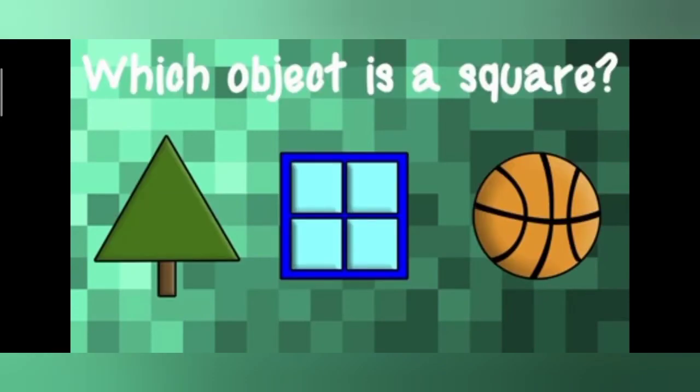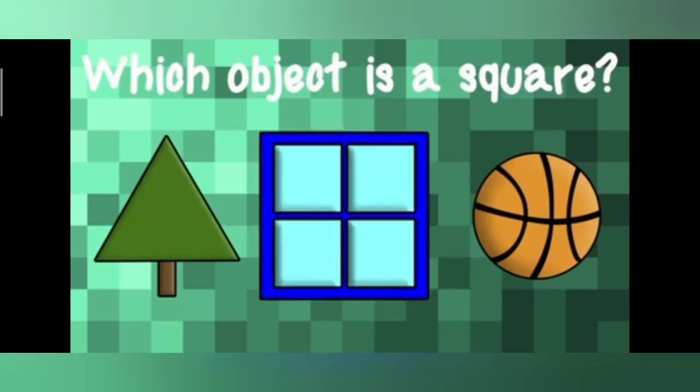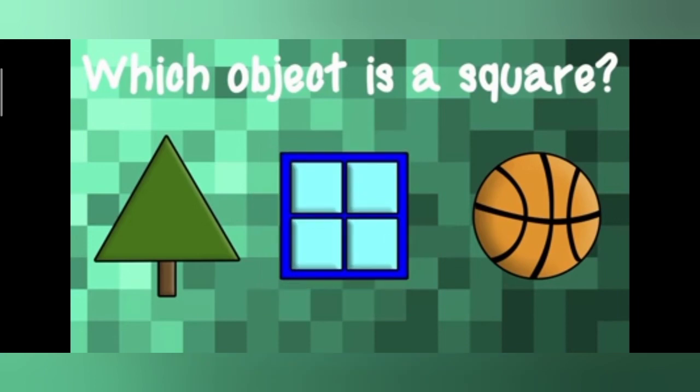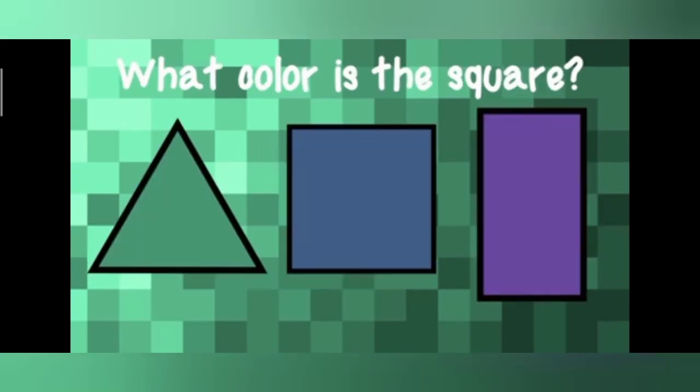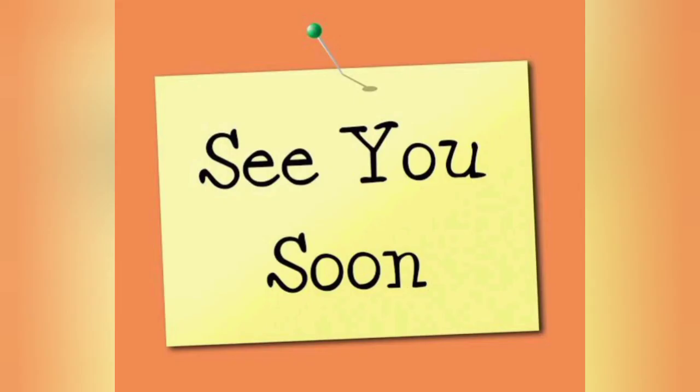Okay, now which object is square here? Yes, the window is square. What color is the square? Is it green or violet or blue? Blue. How many sides does a square have? One, two, three, four. A square has four sides.